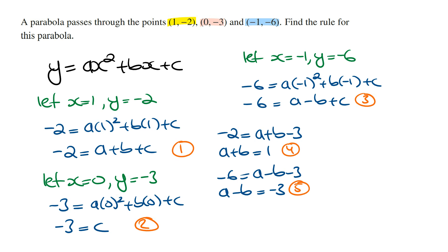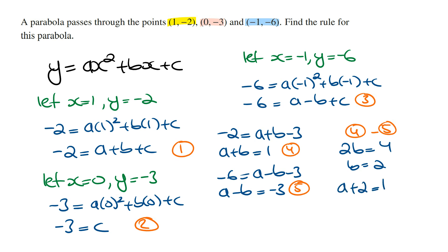Calling these equation 4 (a + b = 1) and equation 5 (a - b = -3), we solve by elimination. Equation 4 minus equation 5 gives: a - a = 0, and b - (-b) = 2b = 1 - (-3) = 4, so b = 2. Subbing b = 2 into equation 4: a + 2 = 1, which means a = -1.